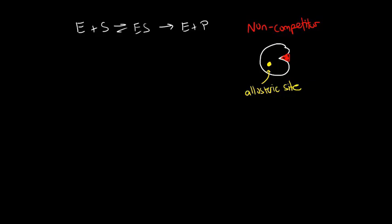So an allosteric site is one that's not in the active site, but an inhibitor binding to this site will actually influence the ability of the enzyme to convert the substrate to the product.